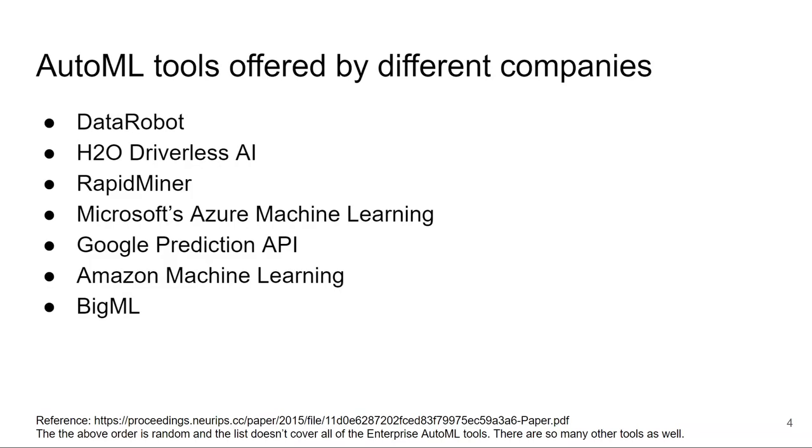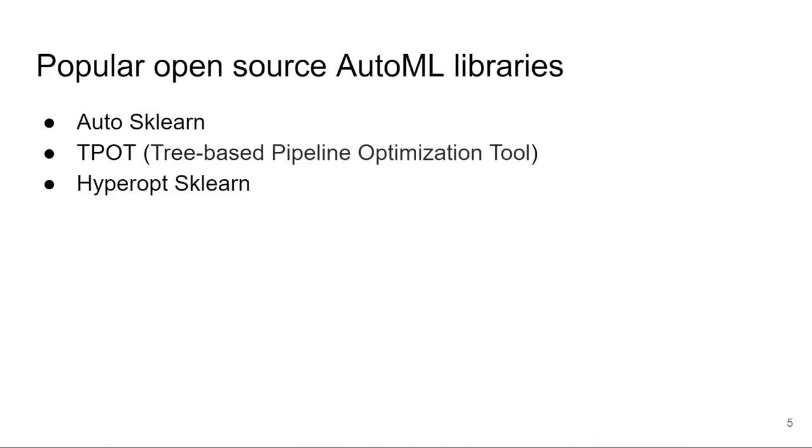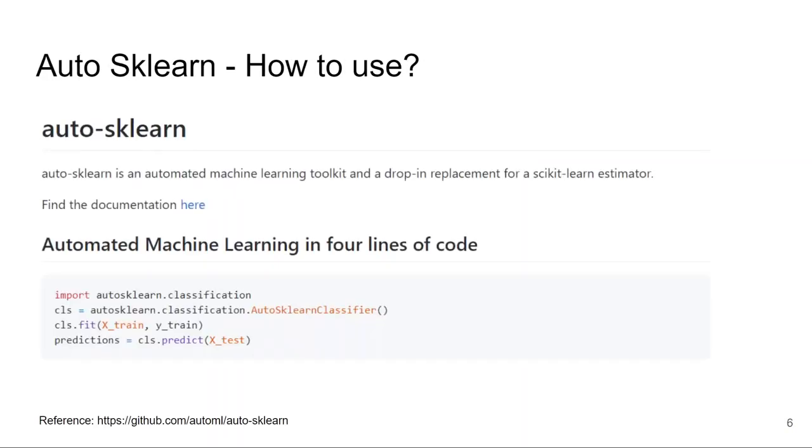Some of the most popular open source libraries are Auto-sklearn, TPOT, and Hyperopt-sklearn. Let's go to each one of them. The first one is Auto-sklearn. From the documentation, it says Auto-sklearn is an automated machine learning toolkit and a drop-in replacement for a scikit-learn estimator.